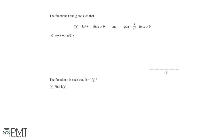In this question, we're given two functions f and g. We're told that f is equal to 3x squared plus 1, for all values of x greater than 0. And we're told that g is equal to 4 over x squared, again for all values of x greater than 0.